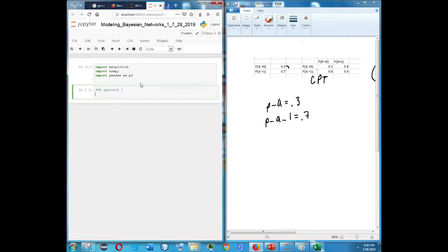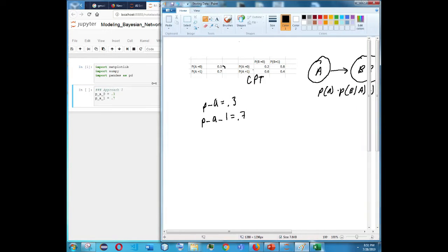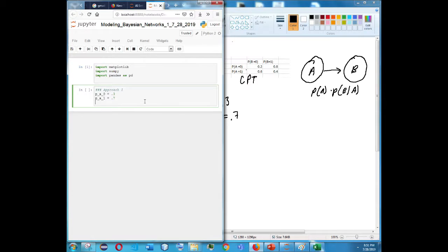We would store P underscore A equals 0, that's 0.3, and A equals 1, 0.7, and so on. I'm not going to continue to write everything here because you'll notice this is just a variable of two variables. What happens when we have like a thousand? It's just not that scalable for us to be writing every single probability out there. So approach 1, definitely not a good one.